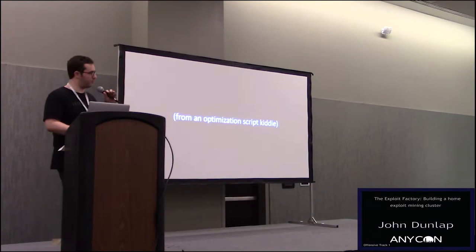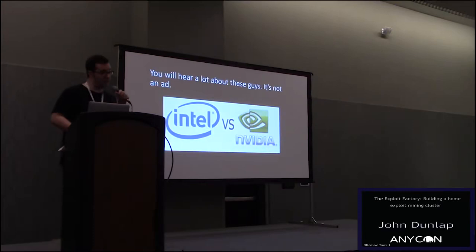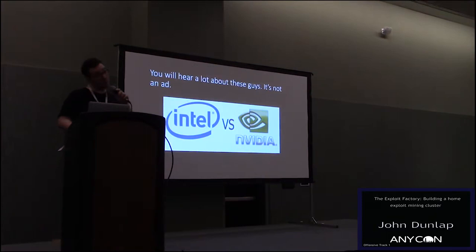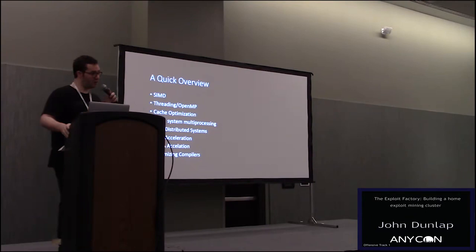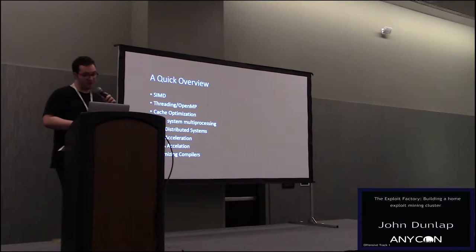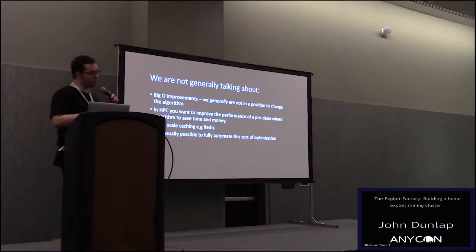There's going to be a lot of talk about two competing approaches — it's not an ad, I'm not advocating for one or the other, but this is the performance arms race going on in computers right now. The techniques we'll cover are: SIMD optimization (single instruction, multiple data), threading with OpenMP, cache optimization, same-system multiprocessing with OpenMPI, GPU acceleration. We won't talk much about FPGA acceleration. We're not going to talk about improving the Big-O or algorithm, which can be more profitable — but with fuzzing we often don't have that choice.